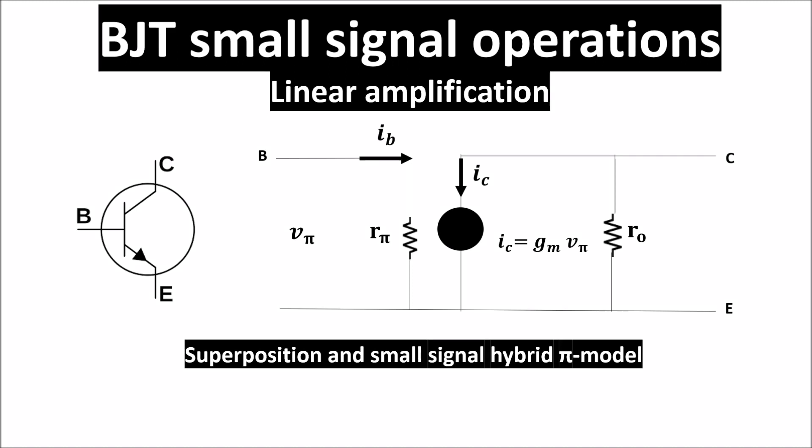In this video we see how a BJT can be used for linear amplification. We see the superposition method of analysis, the hypothesis under which we can get linear amplification, and the hybrid pi model for low frequency.